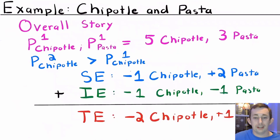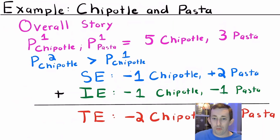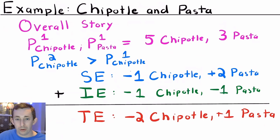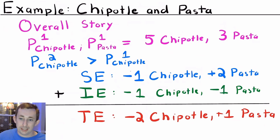Here is the example for today. There are going to be two goods: Chipotle and pasta. They're both normal goods. We have well-behaved preferences over these two goods, which means things like our indifference curves are convex — nothing fancy or weird is happening — and it's just going to help us understand what's happening a little bit better.